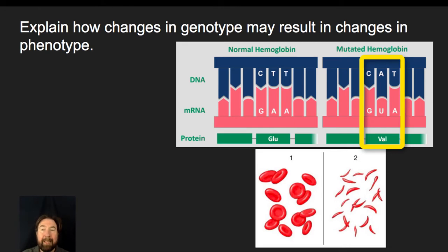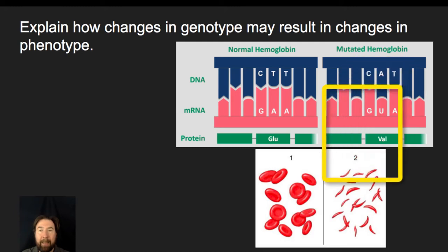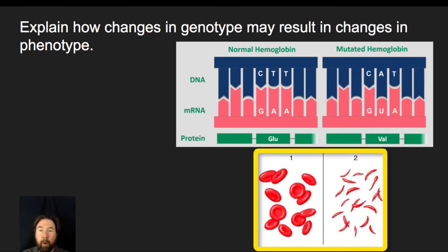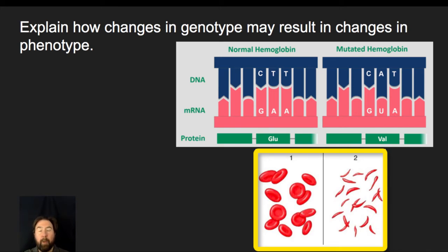The change in amino acid leads to a differently shaped protein. When that protein folds up, it has an impact on the overall shape of red blood cells. So the phenotype of the red blood cell — its physical appearance — is tied to the change in the shape of the protein. When that protein folds, it leads to a different shaped molecule, which ultimately impacts the shape of the red blood cell overall.